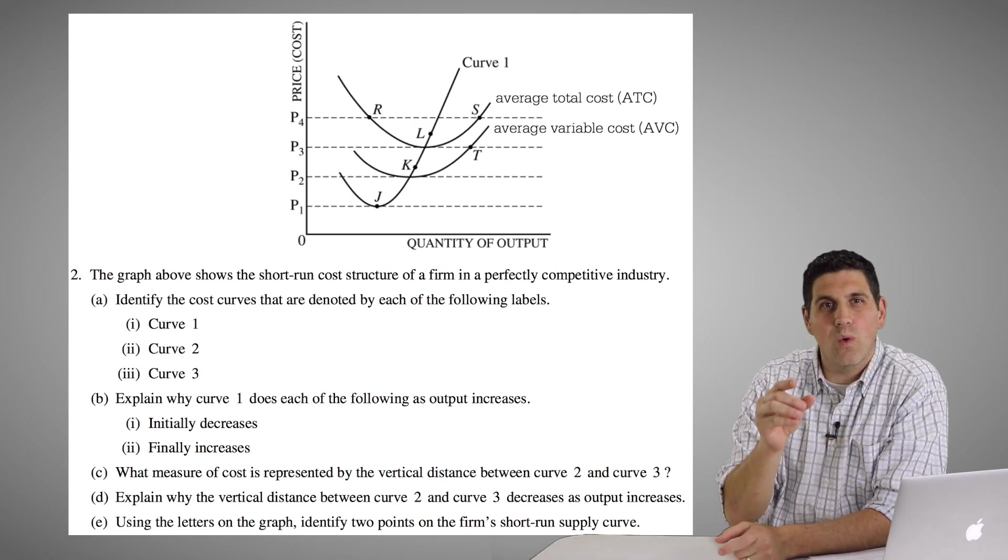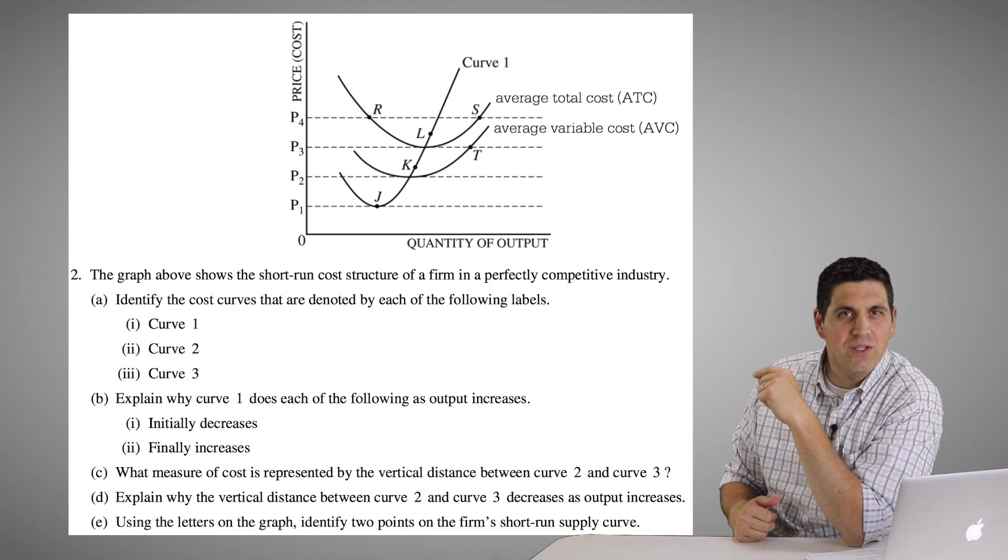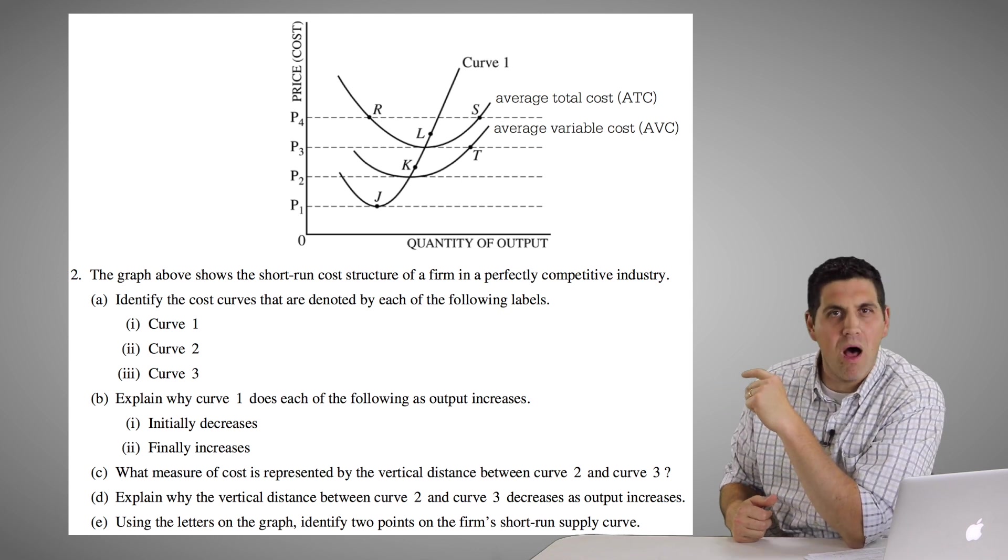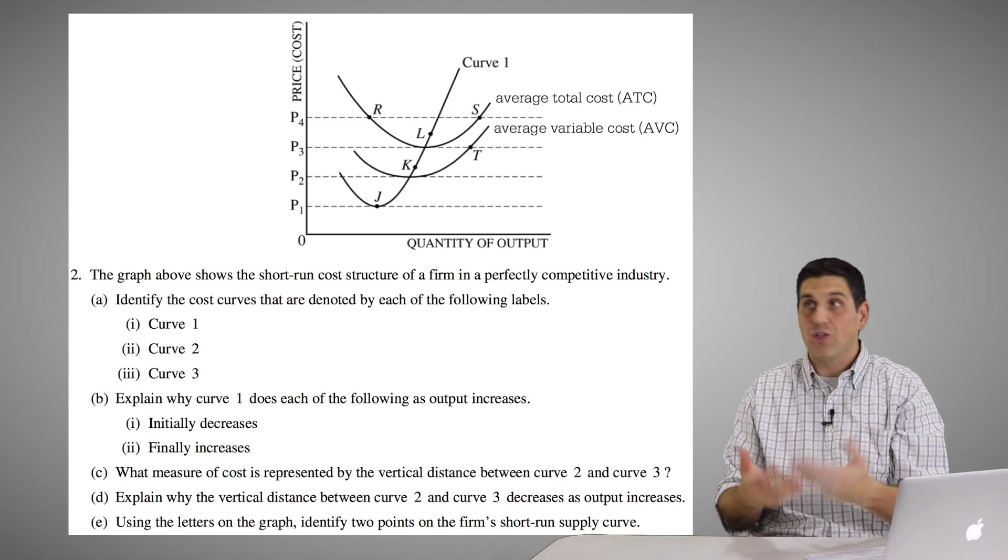And then in part D it asks, well, why? Why don't they actually touch? Why does the distance between these two curves keep getting smaller and smaller? So basically it asks, why does the average fixed cost get smaller and smaller? That's a good question.